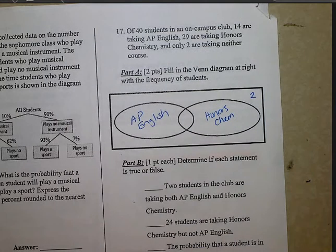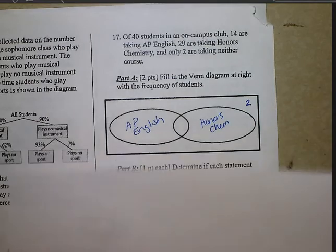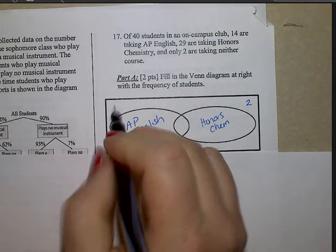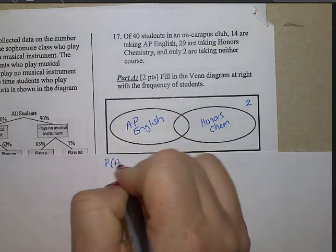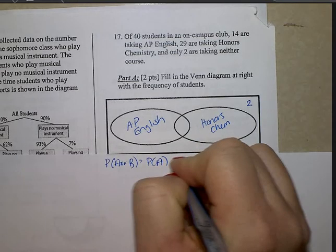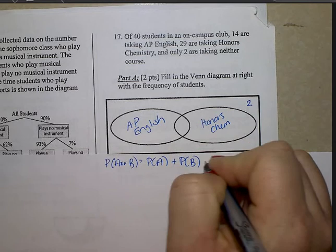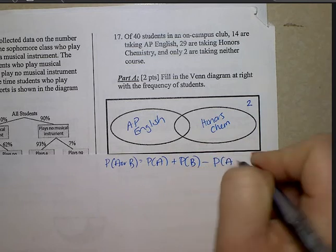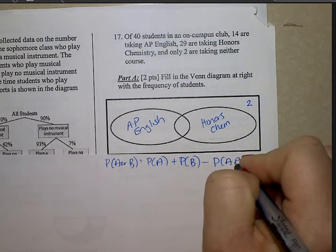We're going to use this overlapping formula. A or B equals probability of A. Remember, you have to have this memorized. Plus probability of B minus the probability of A and B.